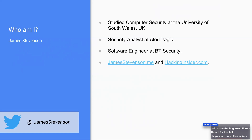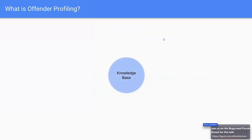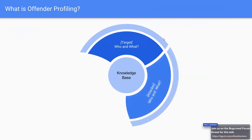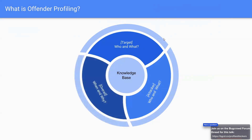So, what is offender profiling? Offender profiling is about building a knowledge base on a malicious actor — getting all of that information and using it to better protect us. It comes down to three main areas: information on the target (who and what was targeted), information on the attacker (who they are, whether state-sponsored, and what attack vector they used), and general overall information — when and why the attack occurred.